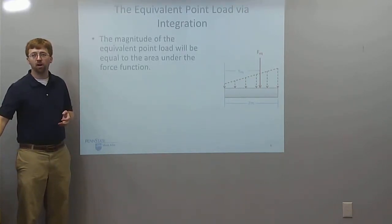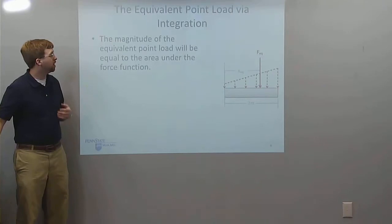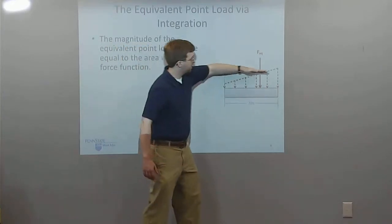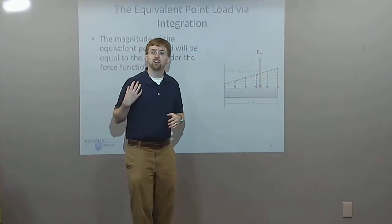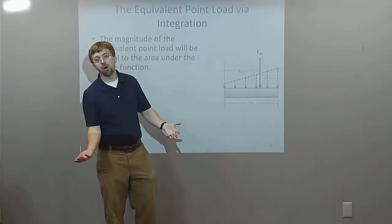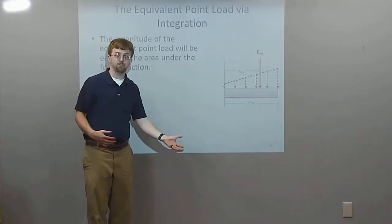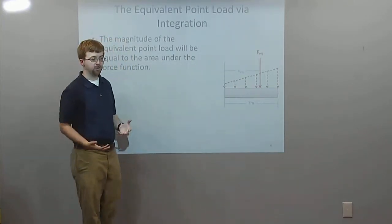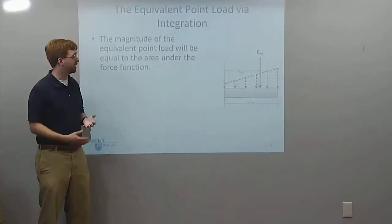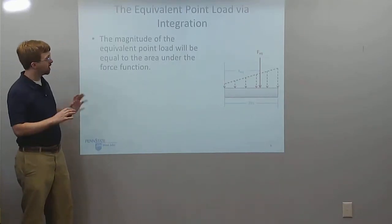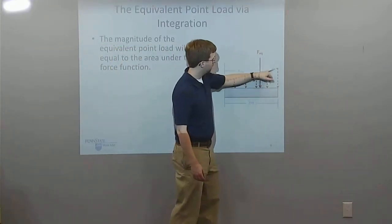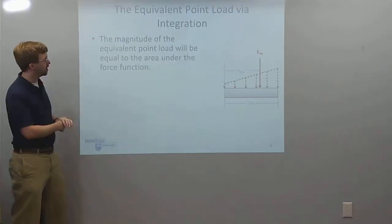The magnitude of the equivalent point load is going to be equal to the area under the force function. For example, if I had a uniform distributed load on a beam that weighed 5 newtons per meter and was 2 meters long, I would multiply 5 newtons per meter times 2 meters to get 10 newtons as the overall weight. To find the area under a continuously changing curve, we take the integral under that curve.